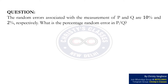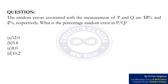Question. The random errors associated with the measurement of P and Q are 10% and 2% respectively. What is the percentage random error in P by Q? The options are: option A 12, option B 9.8, option C 8, and option D 10.2.